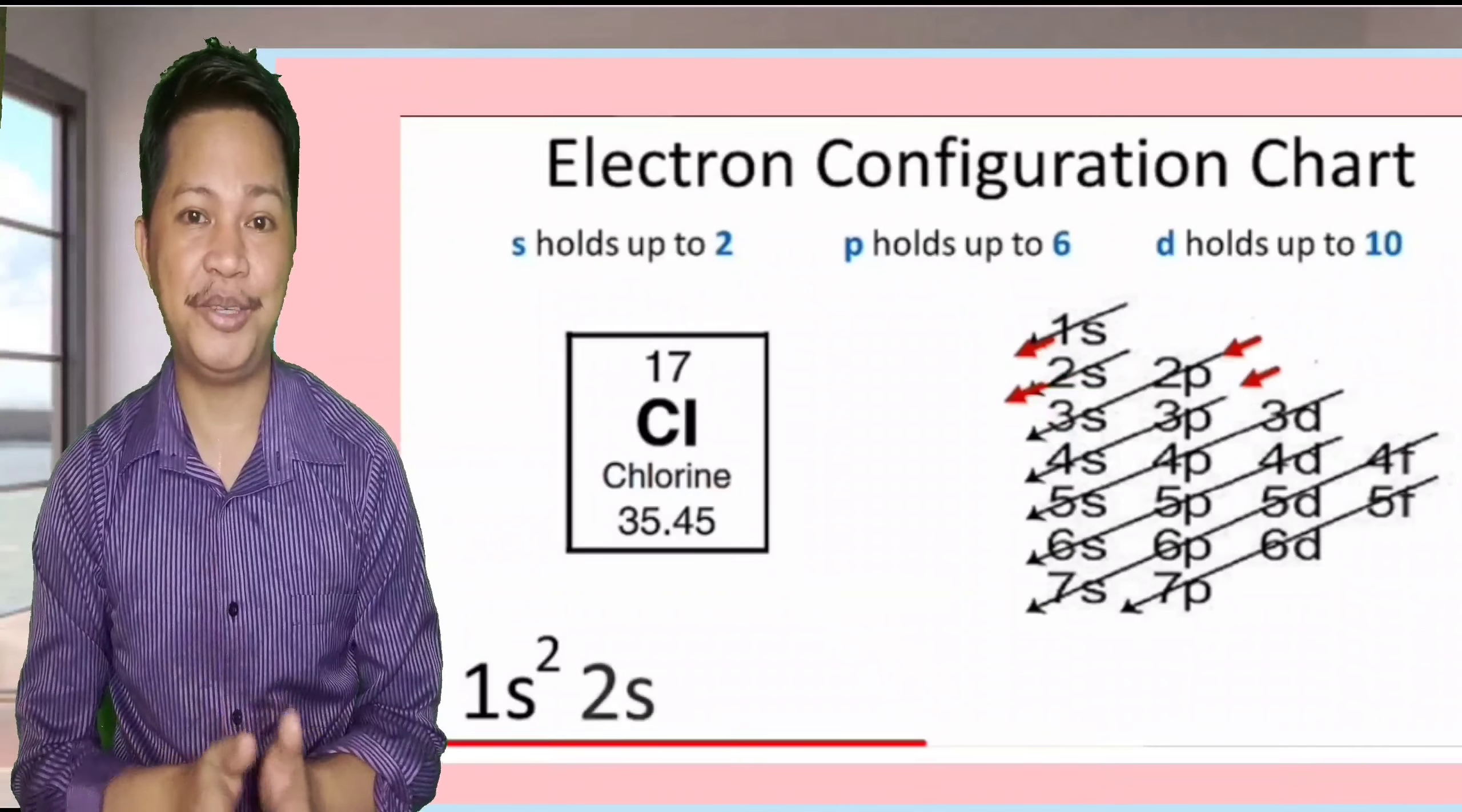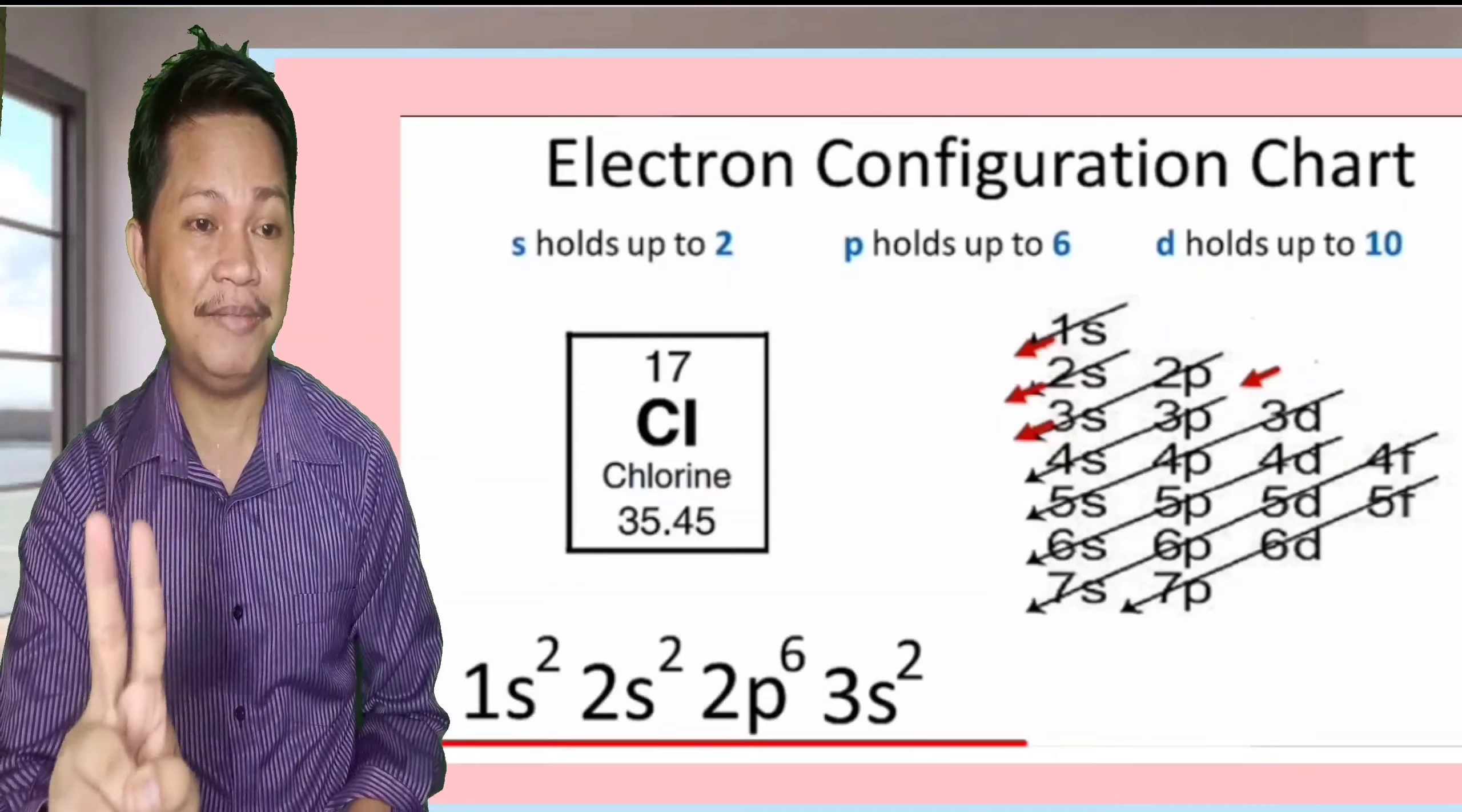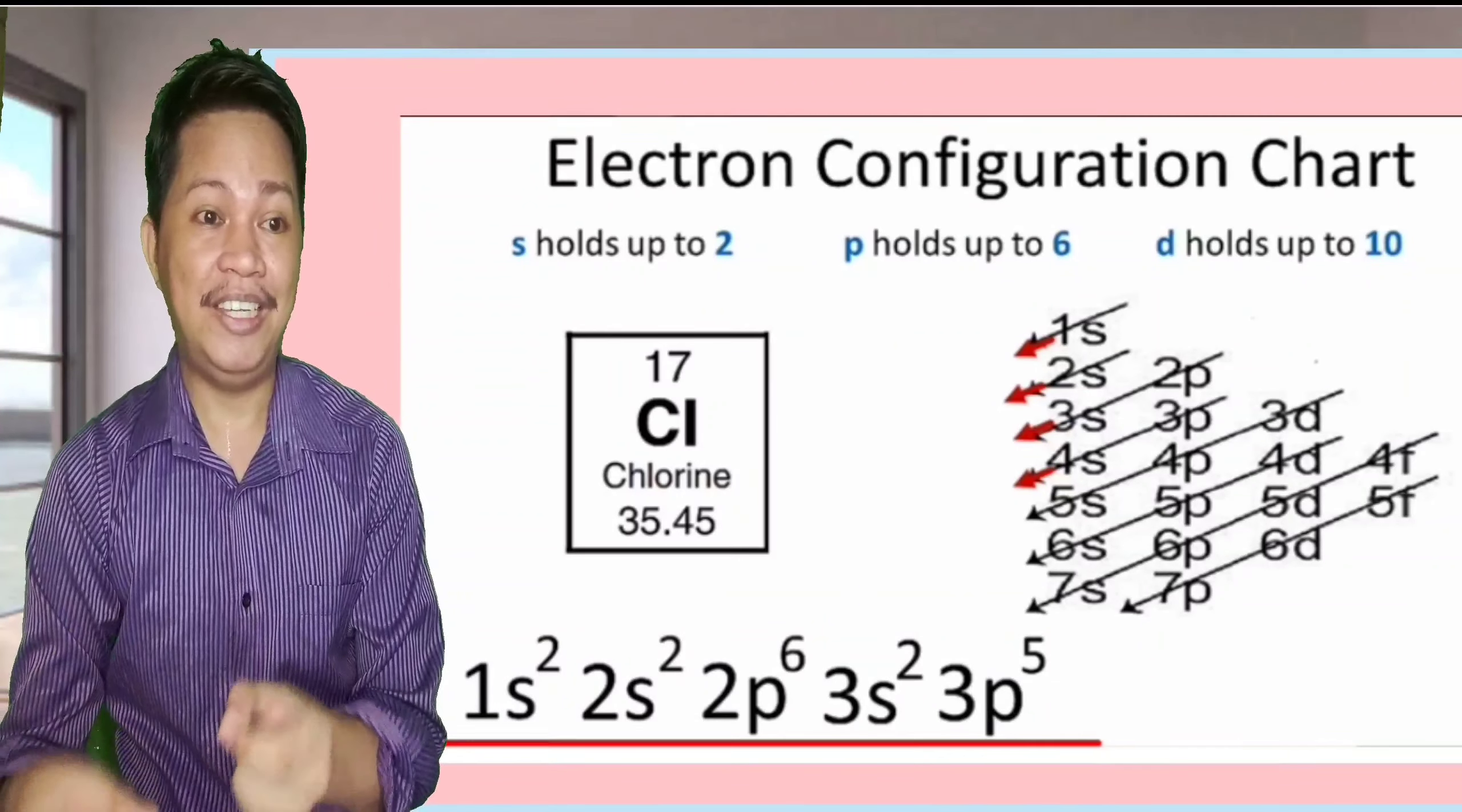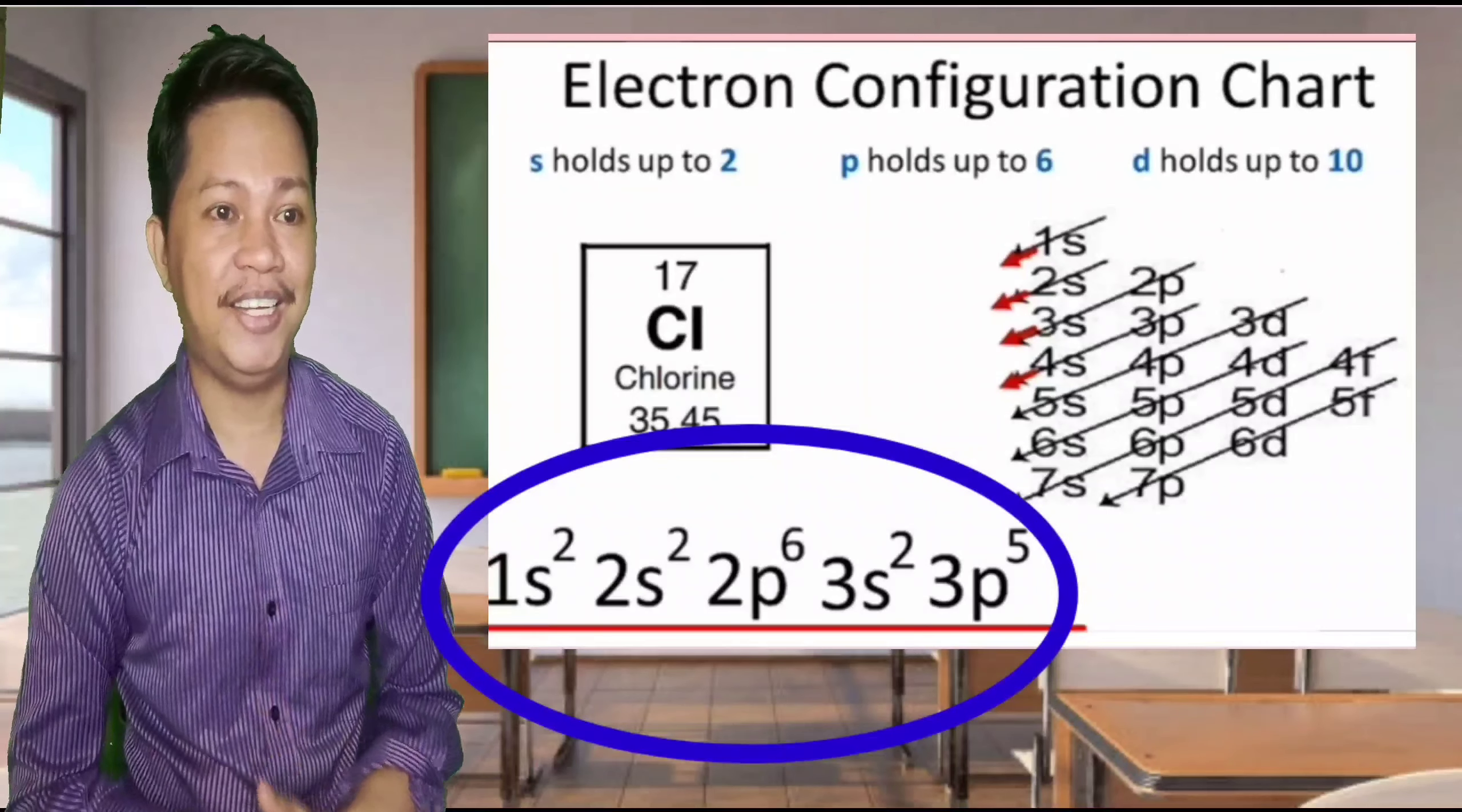In our next video, we have chlorine. Same process. 1s2, then 2s2, then it's 4, then another 1. We have 2p, and then look at that, 2p6—maximum electrons. 2 plus 2 is 4, plus 6 is 10. We still need 7 more. That's why we move to 3s. 3s2, so we have 12. We still need 5 more. Then up to 3p, so 3p5. Our electron configuration now is 1s2, 2s2, and then ending at 3p5. Do you get me? Do you understand now?